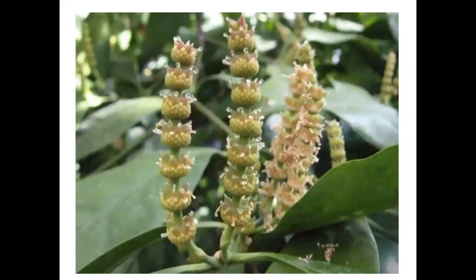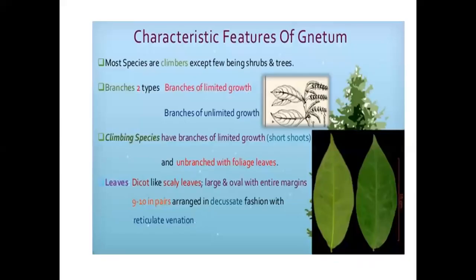This is the photograph of Natum. Characteristic features of Natum: most species are clambers, except some being shrubs and trees. Branches are of two types: branches of limited growth and branches of unlimited growth. Climbing species have branches of limited growth — short shoots, unbranched with foliage leaves. Leaves are dicot-like, scaly leaves, large and oval with entire margins, 9 to 10 in pairs, arranged in decussate fashion with reticulate venation.